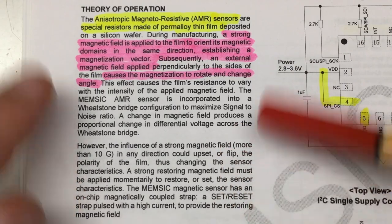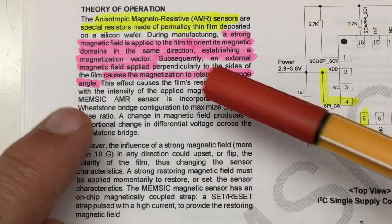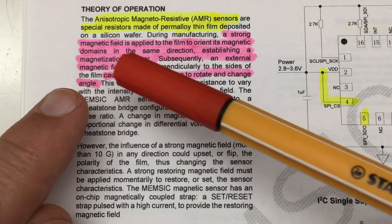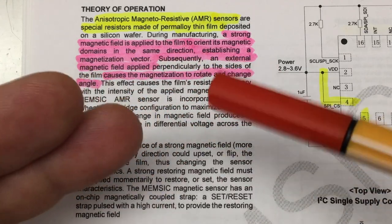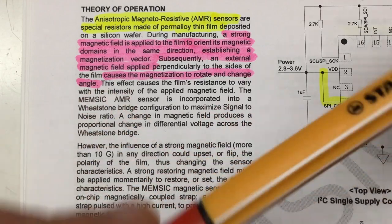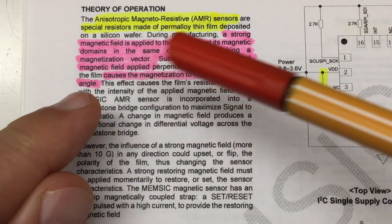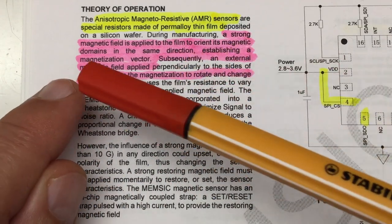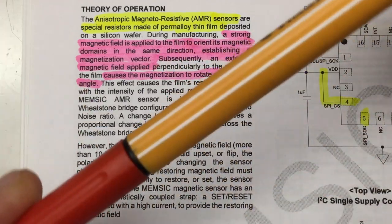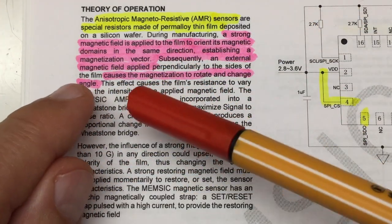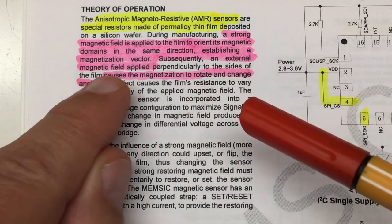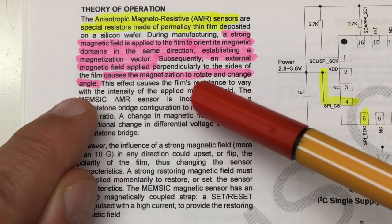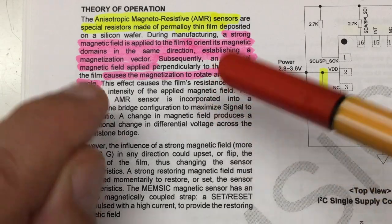Unfortunately, we're not yet done. Because here in the theory of operation, it continues. A strong magnetic field is applied to the film to orient its magnetic domains in the same direction. Basically, we have a perm alloy here, so we can pre-magnetize it. And forget about that during manufacturing for just a second. Establishing a magnetization vector. A pre-magnetization. We have a north and a south pole in our material. Subsequently, an external magnetic field applied causes the magnetization to rotate and change angle. Let's have a look at that.